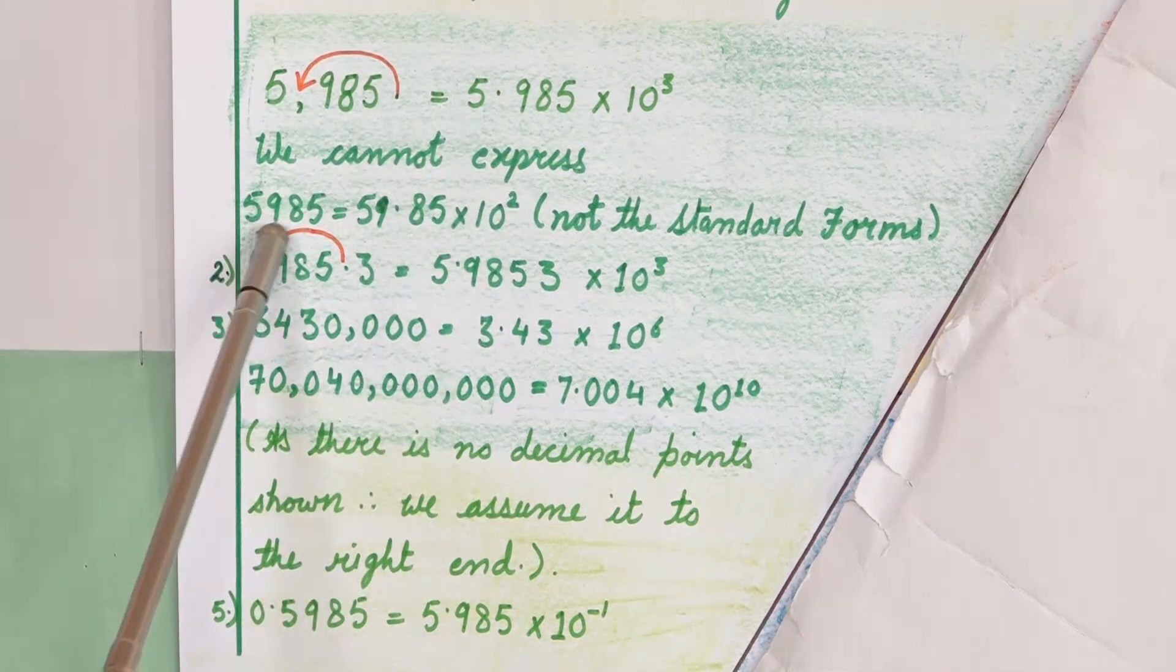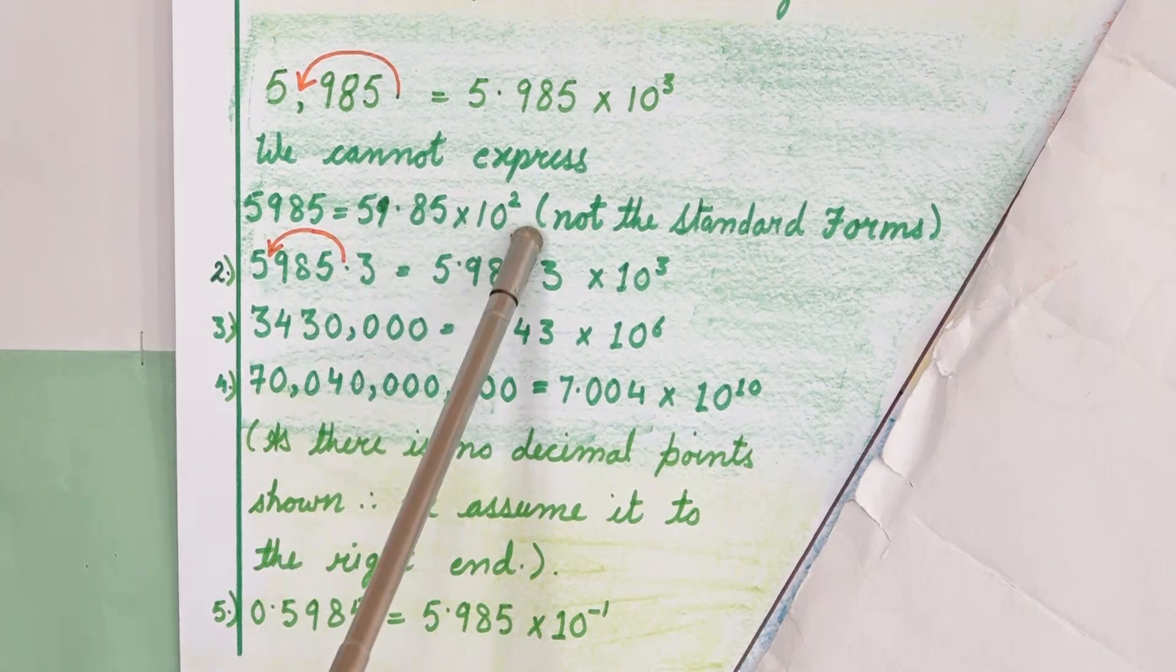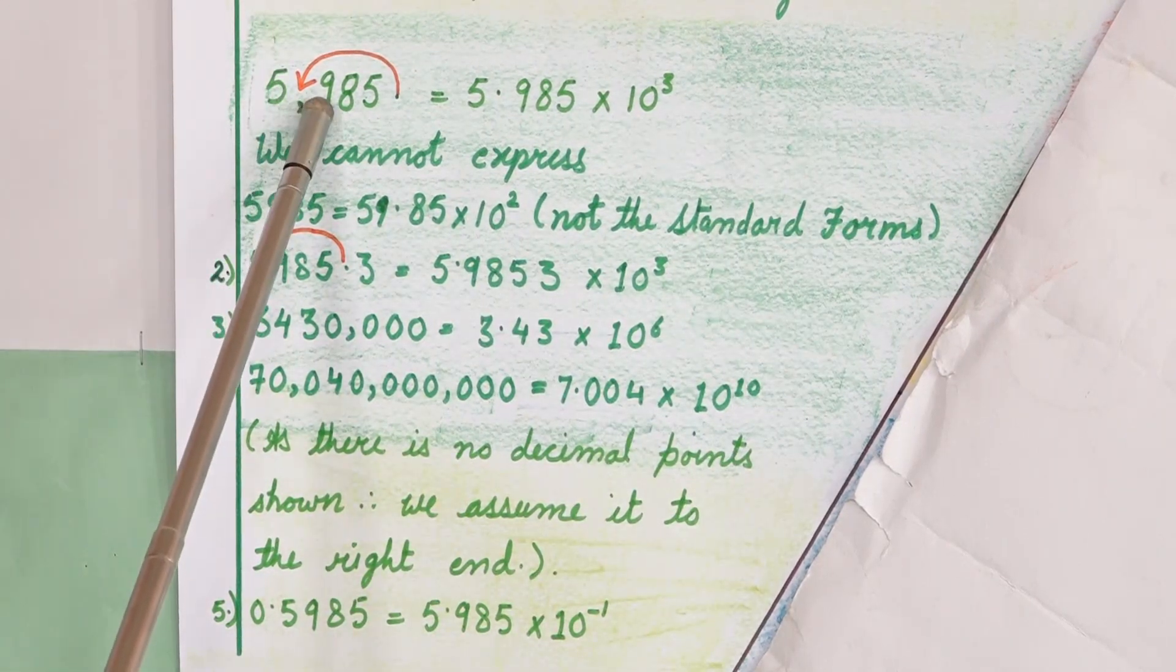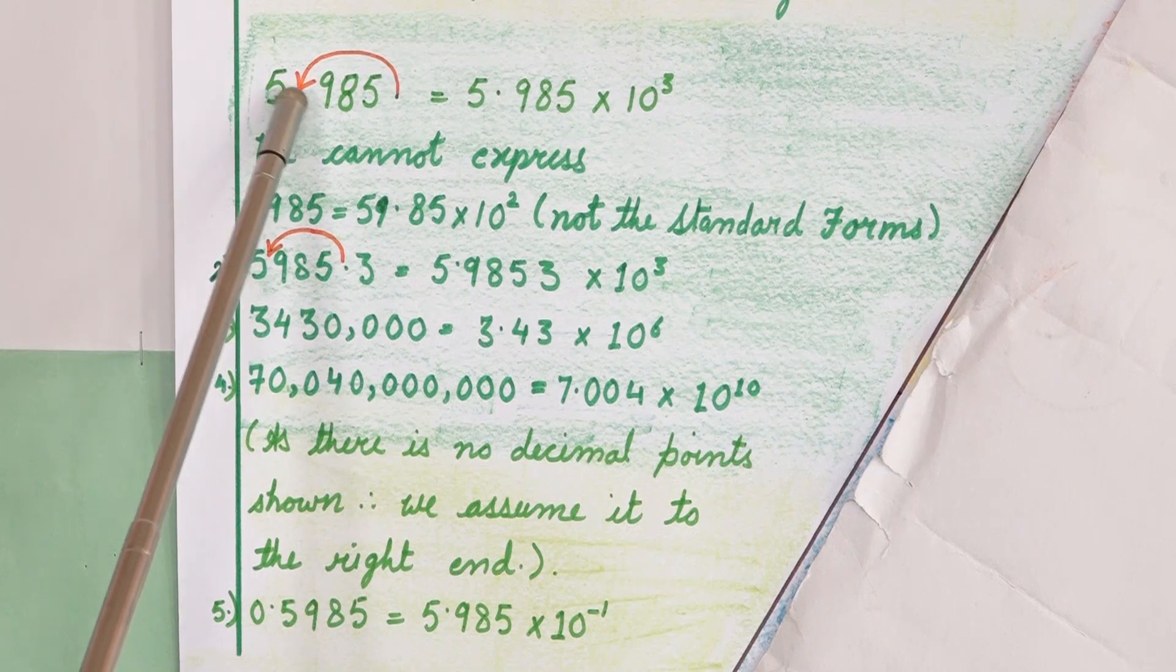We cannot express 5,985 like this, because in standard form we want decimal sign after one digit.